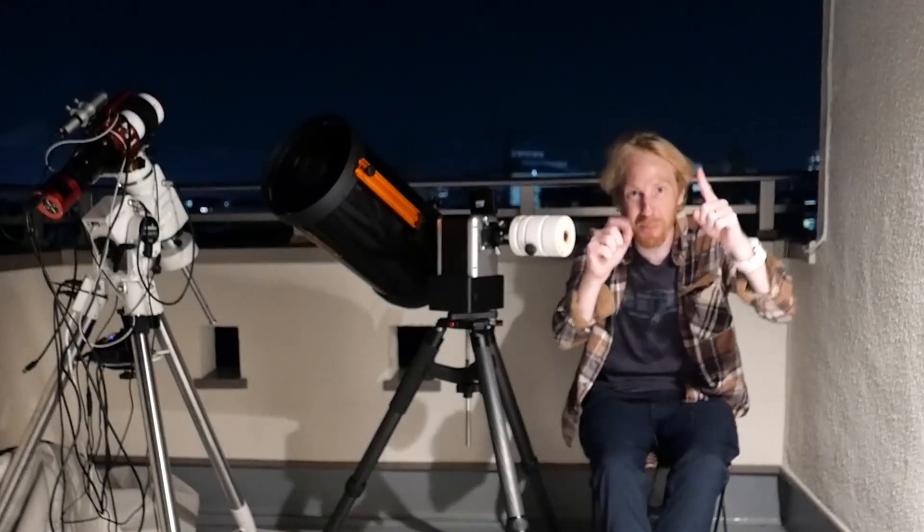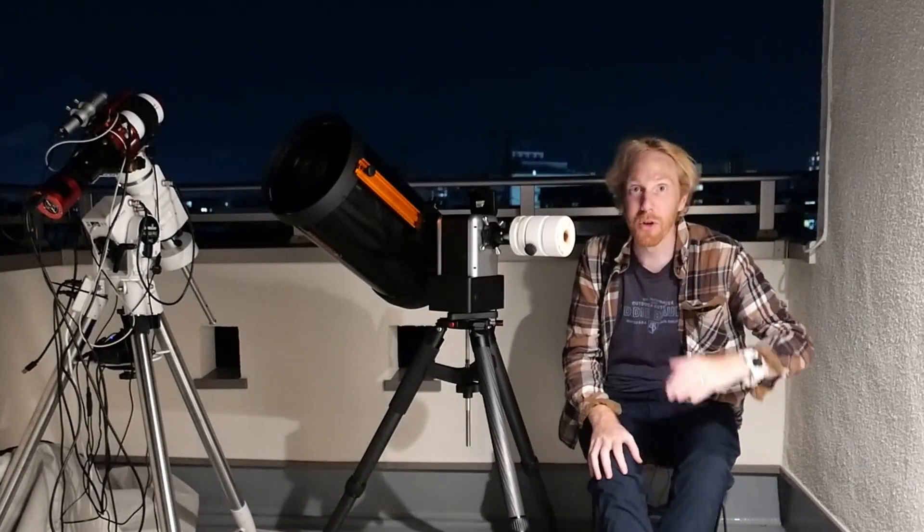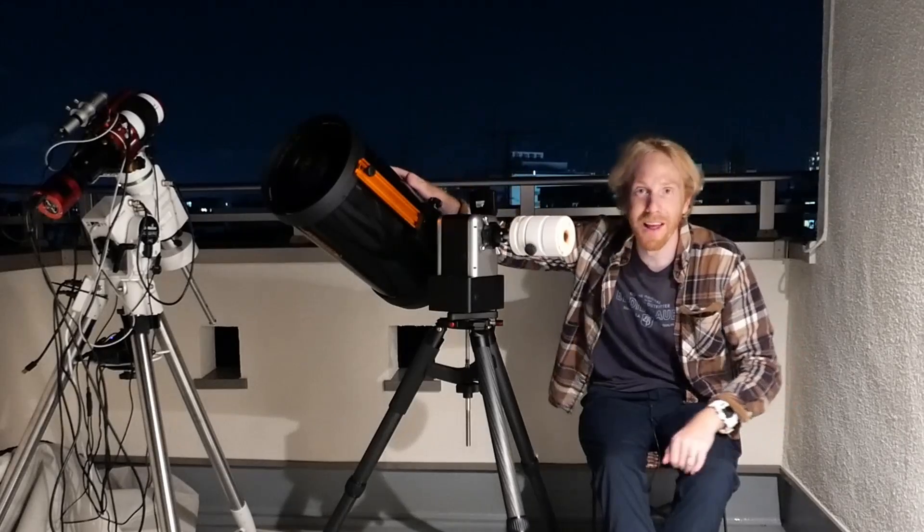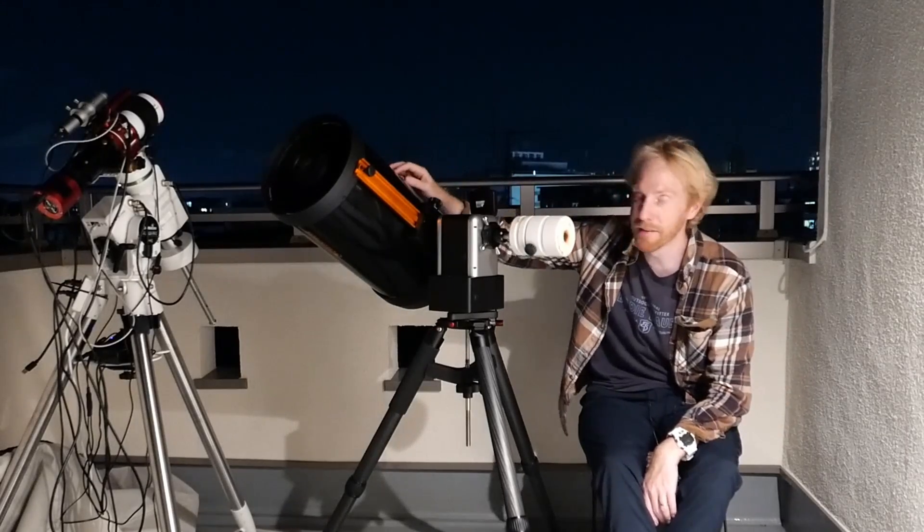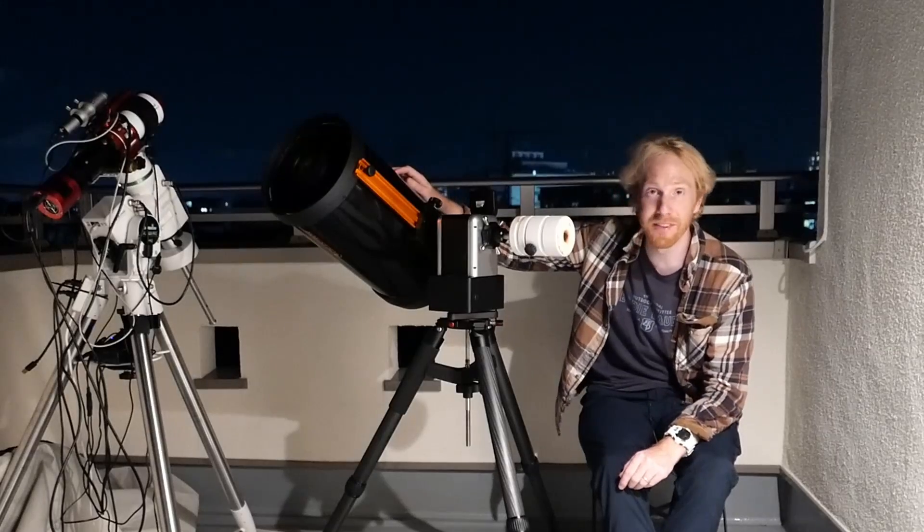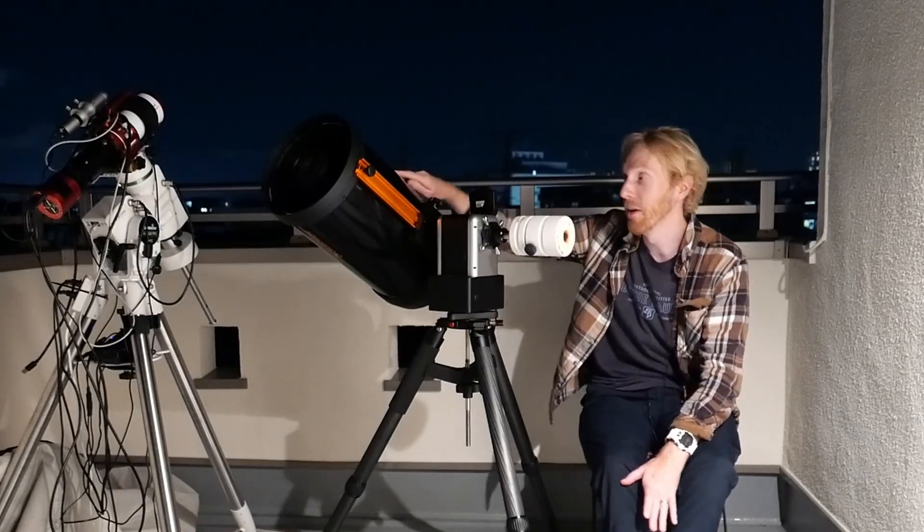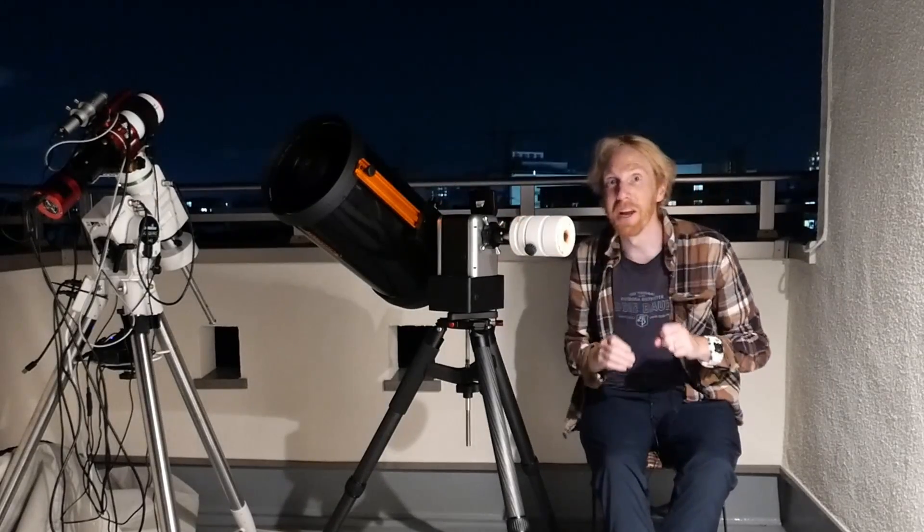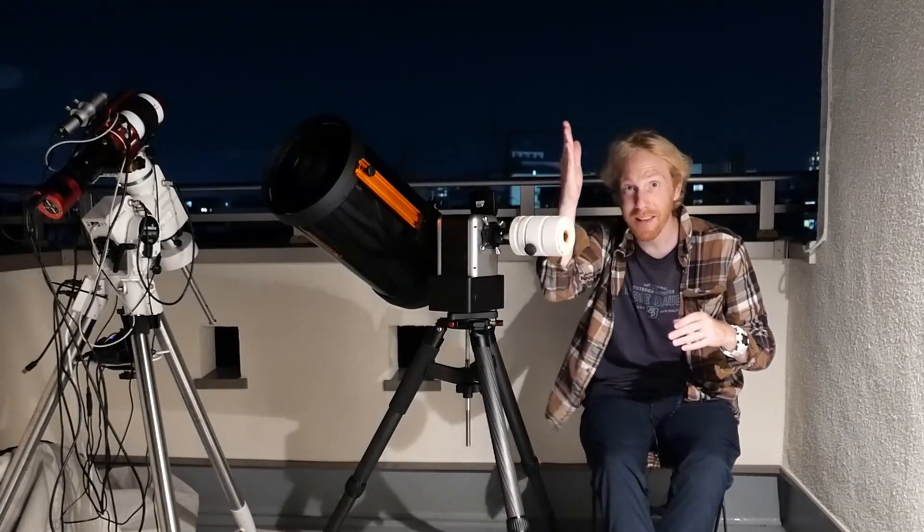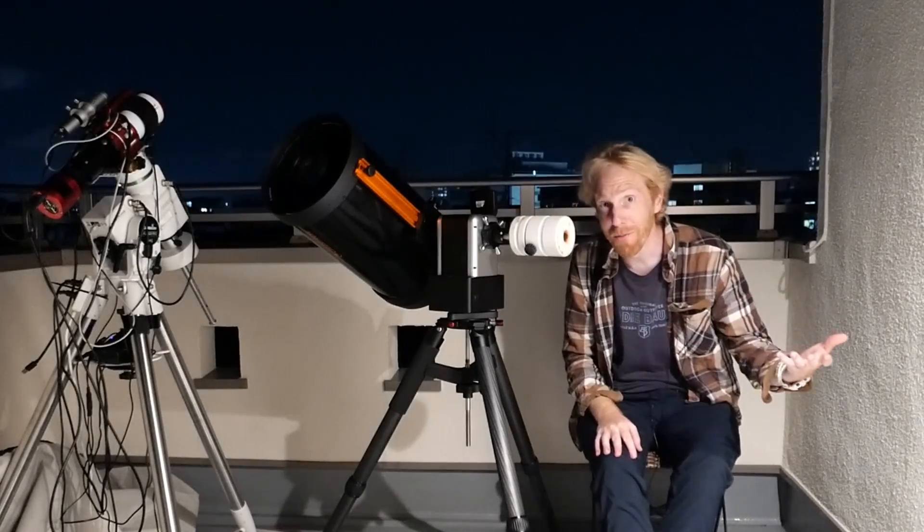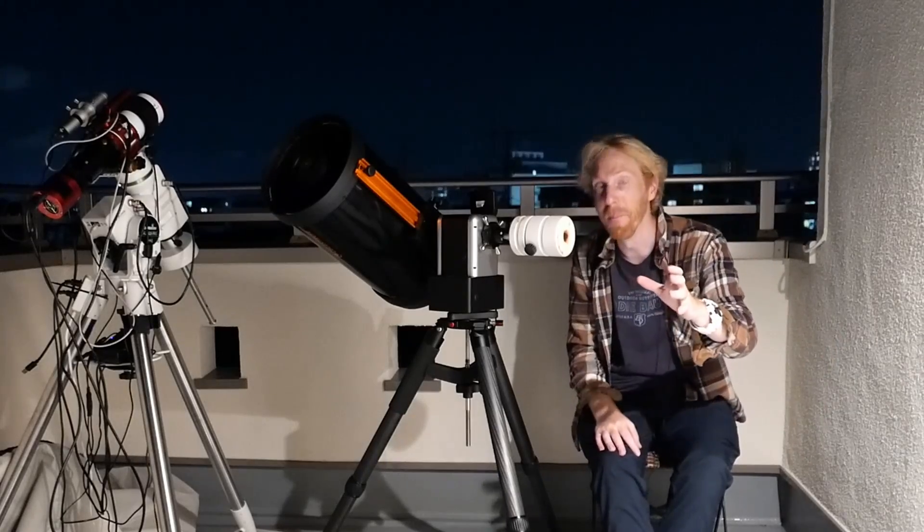So tip number one, you can take up planetary imaging. So if you have a Schmidt-Cassegrain telescope like this amazing Celestron C9.25 telescope, well, you can point it to the Moon, our enemy. You can point it to Jupiter. You can point it to Saturn and you can observe them, obviously, but you can also image them.